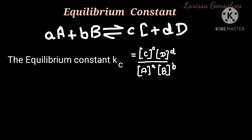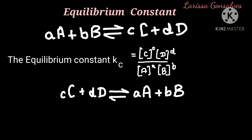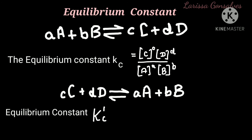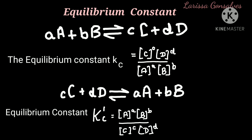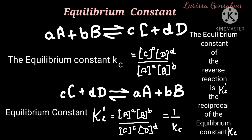Now if we take the same reaction in the reversed form, C plus D giving A plus B, the equilibrium constant will be denoted as KC dash. We get KC dash equal to concentration of A raised to a, times concentration of B raised to b, divided by concentration of C raised to c, times concentration of D raised to d. Comparing the two equations, KC dash equals 1 divided by KC. So the equilibrium constant of the reverse chemical reaction is the reciprocal of the equilibrium constant KC.